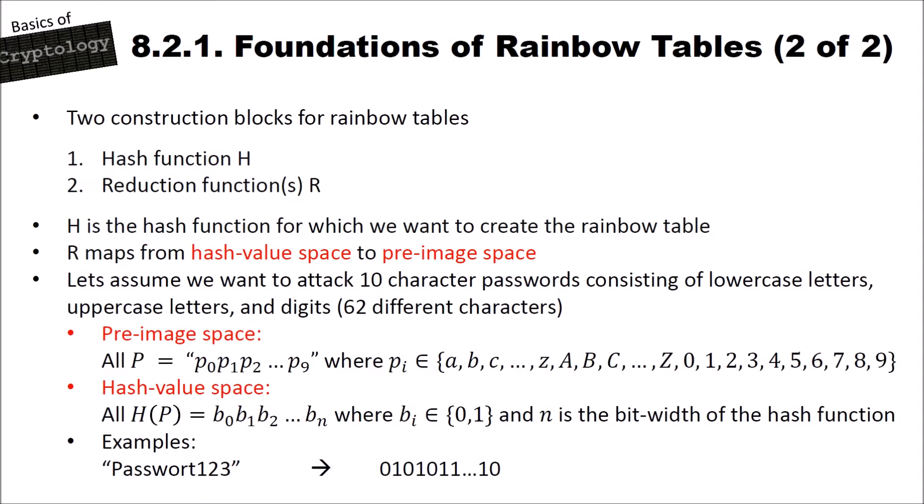Which are the construction blocks of rainbow tables? There are two main construction blocks. First we have our hash function h, and then we have the reduction function or reduction functions r. h is the hash function for which we want to create the rainbow table, and r maps from the hash value space to the pre-image space. Now let's assume we want to attack a 10-character password consisting of lowercase letters, uppercase letters and digits, with a total of 62 different characters.